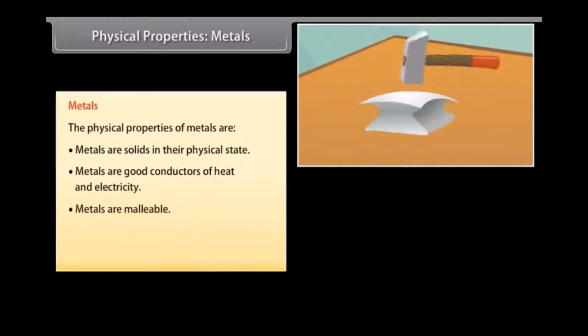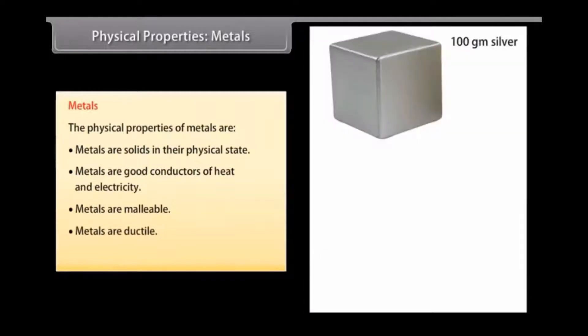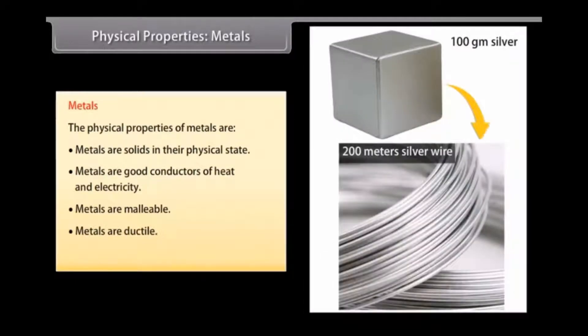Malleable: Metals can withstand hammering and be made into thin sheets known as foils. For example, iron is heated and then hammered into different forms, foils, shapes, etc. Ductile: Metals can be drawn into wires. For example, 100 grams of silver can be drawn into a thin wire of about 200 meters long.